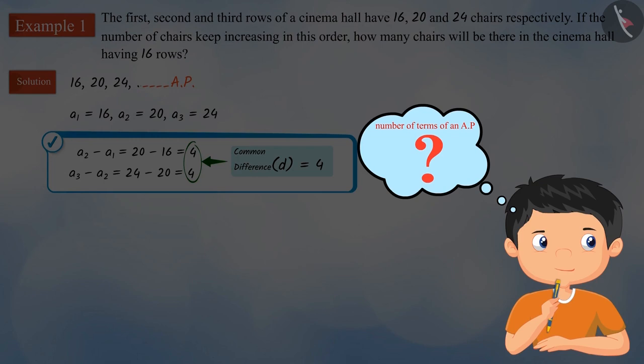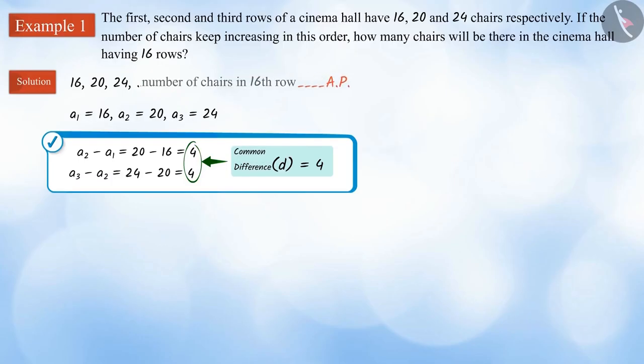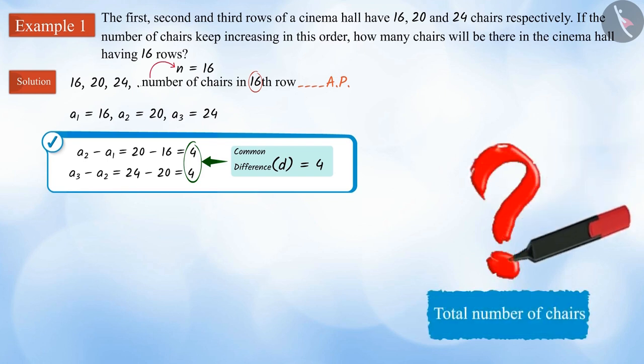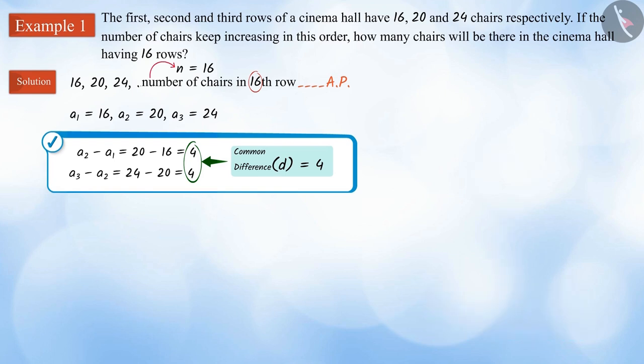Can you tell the number of terms this arithmetic progression will have? As we know, the cinema hall has 16 rows. The number of terms n in this arithmetic progression will be 16. Now, what do we have to do to find the total number of chairs in the cinema hall? To know the total number of chairs, we need to find the sum of 16 terms of the arithmetic progression. And how can we do this?